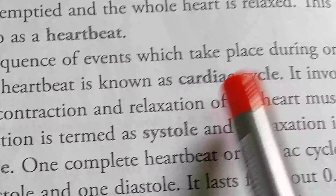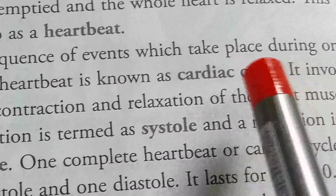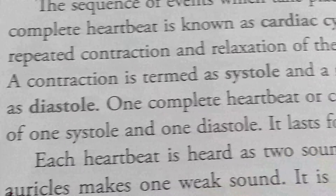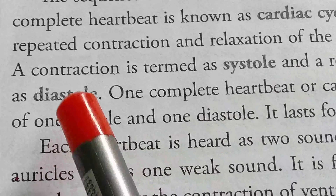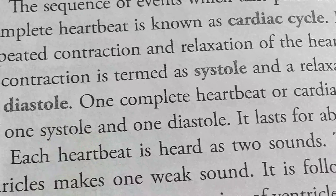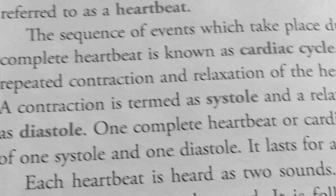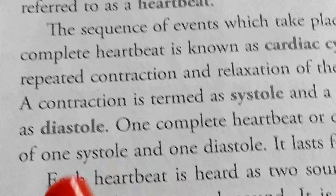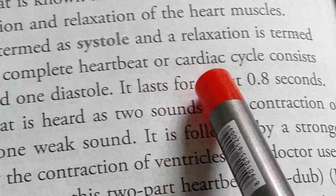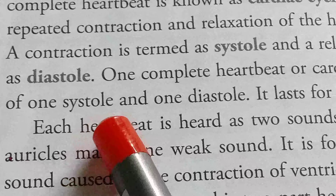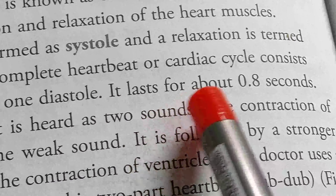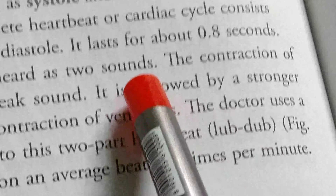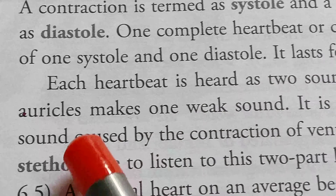The cardiac cycle involves complete contraction and relaxation of heart muscle. A contraction is termed systole and relaxation is termed diastole. One complete heartbeat, or cardiac cycle, consists of one systole and one diastole, and it lasts for about 0.8 seconds.